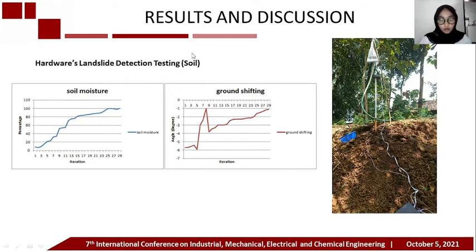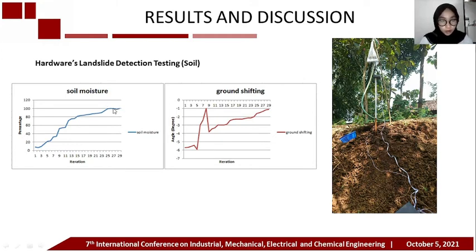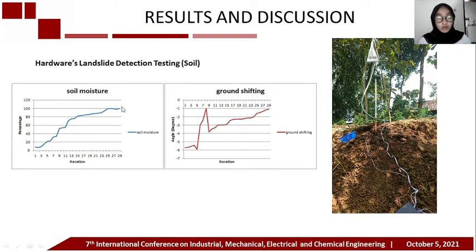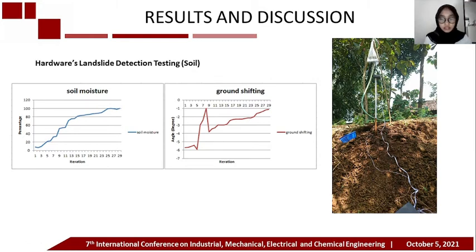On the graph, it can be seen that over time the humidity also experienced a steady increase. But at a certain point, the soil began to be unable to absorb water and the water began to stagnate, making the humidity value unstable. At this point, the soil can no longer hold water and soil degrades along with the flow of water. For ground movement, because the sensor is very sensitive, the value changes quickly and will consistently continue to rise along with the increase in the humidity value.